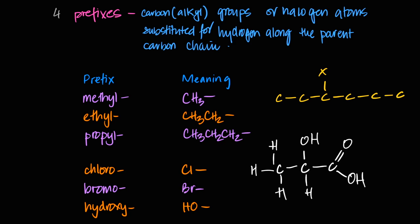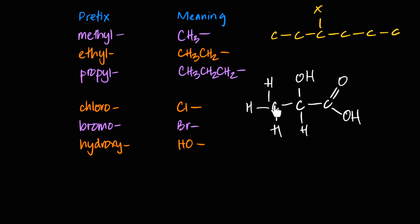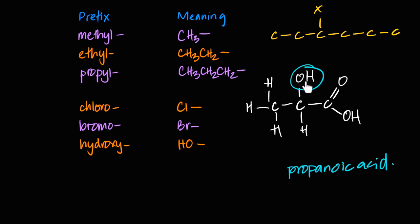Going back to the example of 2-hydroxypropanoic acid: you have a three-carbon acid with an OH on the second carbon. The main name is 'propanoic acid' — three carbons, all single bonds, acid suffix. Then comes the prefix: the OH here is not the principal functional group because the acid takes priority, so this OH is called a 'hydroxy' group. Carbon one is the acid end, carbon two has the OH, carbon three is the far end. So the OH is on position two, giving us 2-hydroxypropanoic acid.